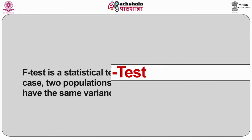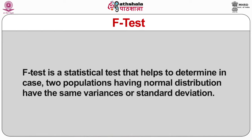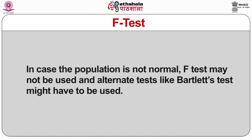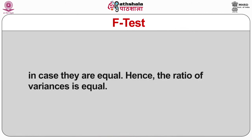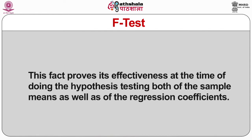F-Test is a statistical test that helps to determine if two populations having normal distribution have the same variance or standard deviation. It is an important constituent of analysis of variance. In case the population is not normal, F-Test may not be used and alternate tests like Bartlett's test might have to be used. The comparison of variance is done by comparing the ratio of two variances; if they are equal, the ratio of variance is equal. This proves its effectiveness at the time of hypothesis testing for both sample means as well as regression coefficients.